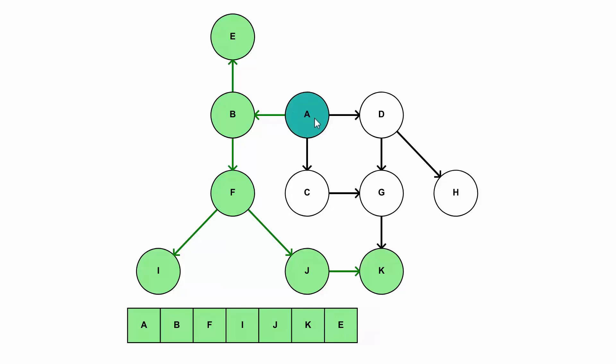And now A has to pick another child. So it picks C. And C only has one child to apply the function to. So we run the function here on G. And G has one child here, but it has already been visited. So we don't call the function on that. So we just return back into C and back all the way to A.